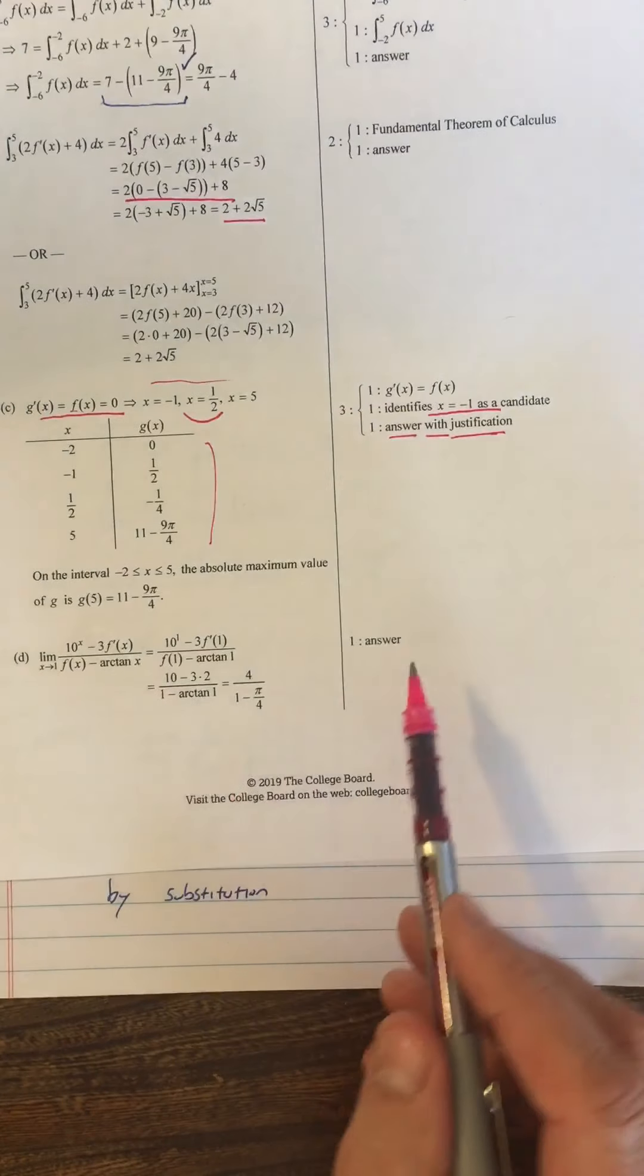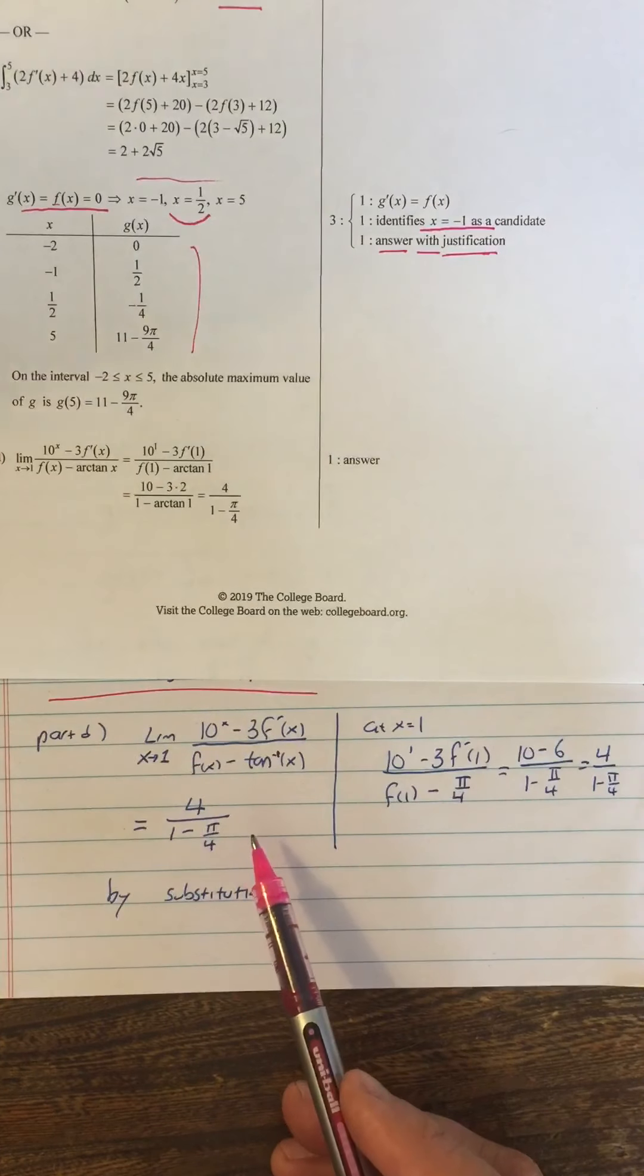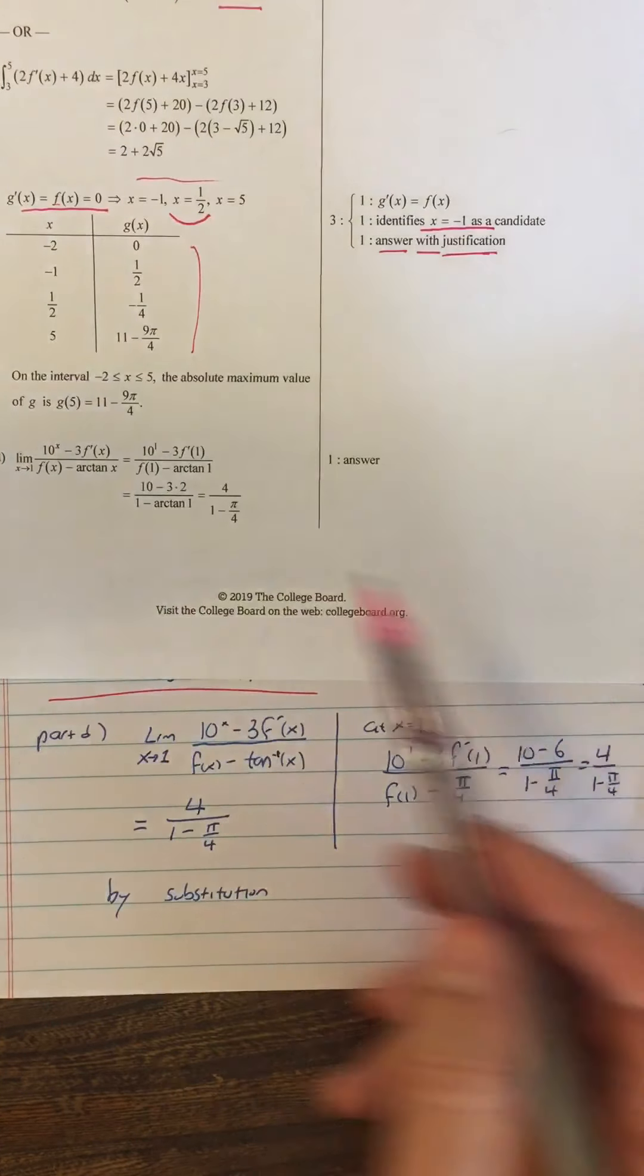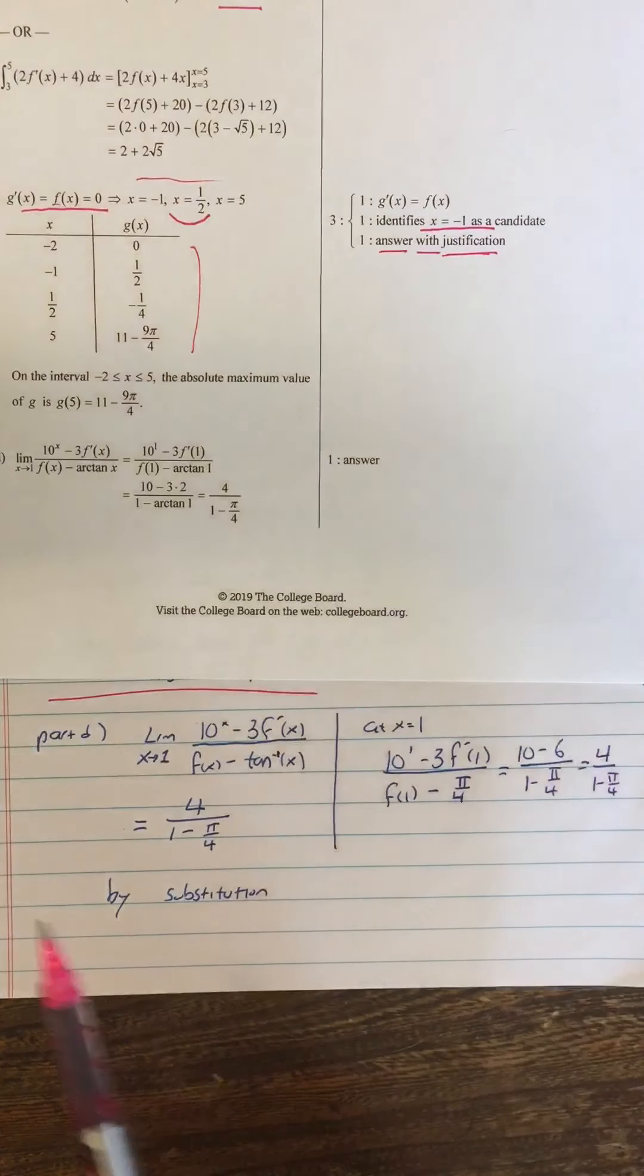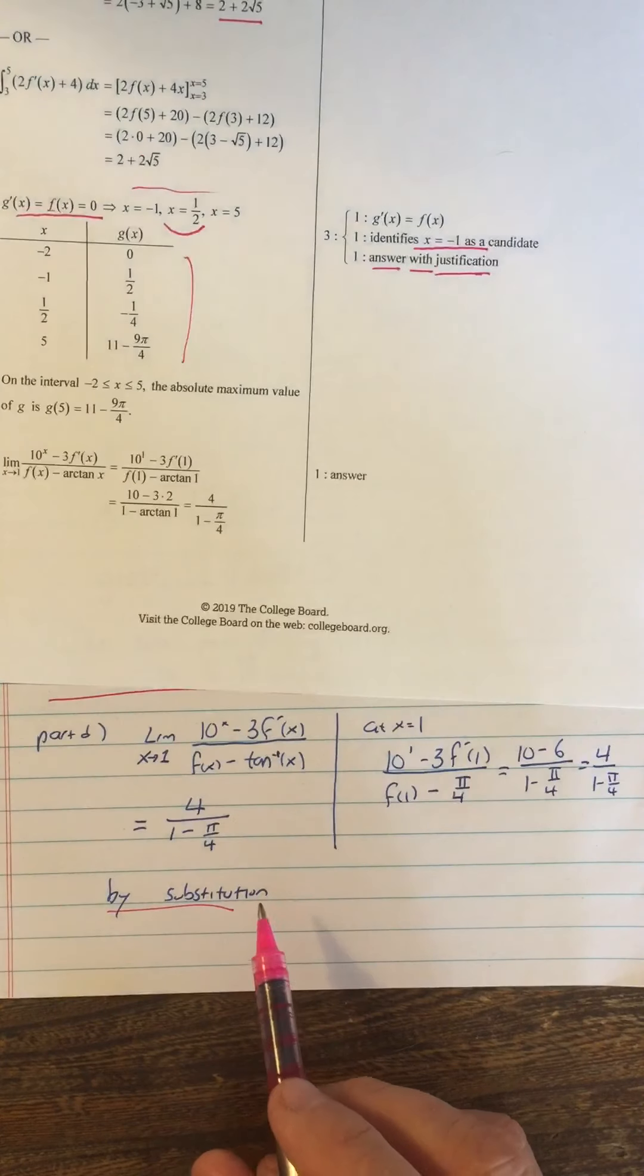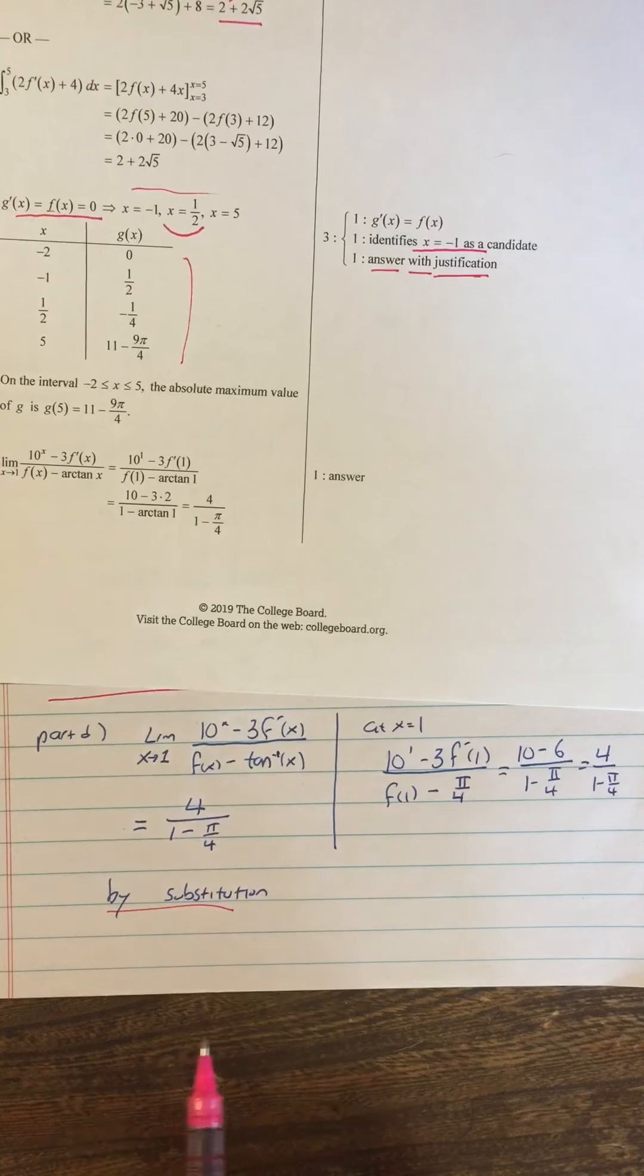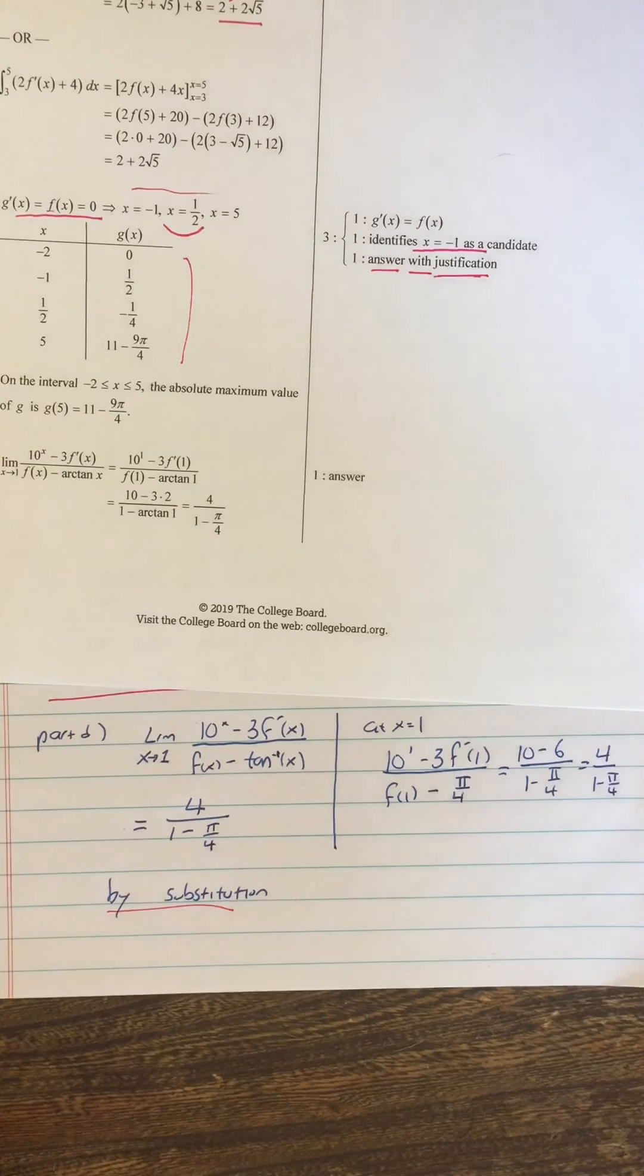And then for part D, is just one point, because it was simple. All you had to do is plug in the one, so there was nothing else to do, and there's nothing else to point to. They did not say by substitution like I did, but I think it's always good on the AP exam to be really explicit with all your justifications of everything. So I did that, and I don't regret it a bit. And so that's how our points fall out for number three.